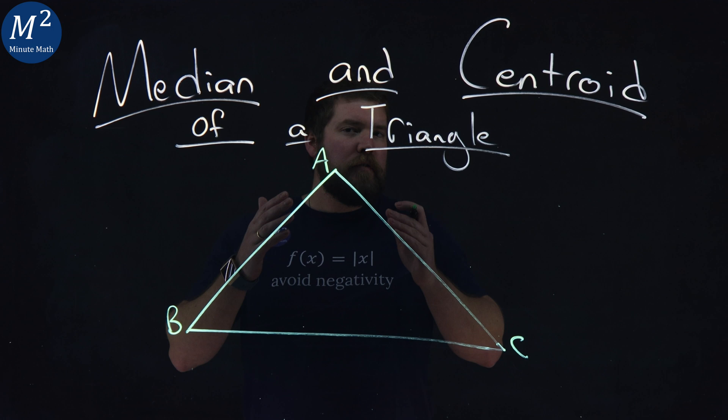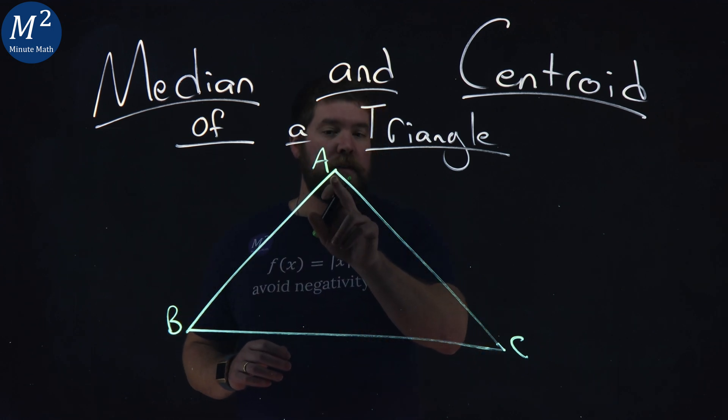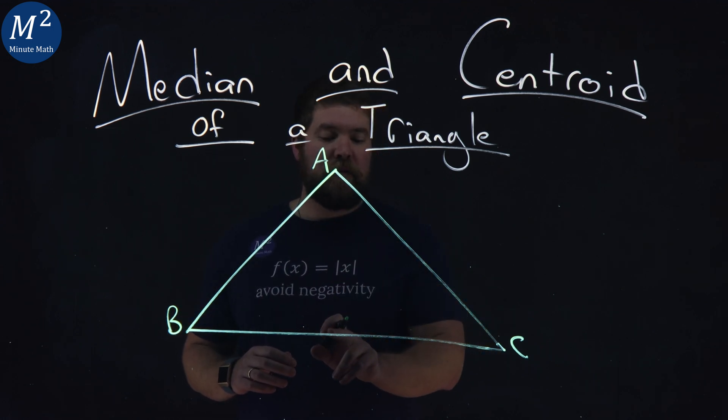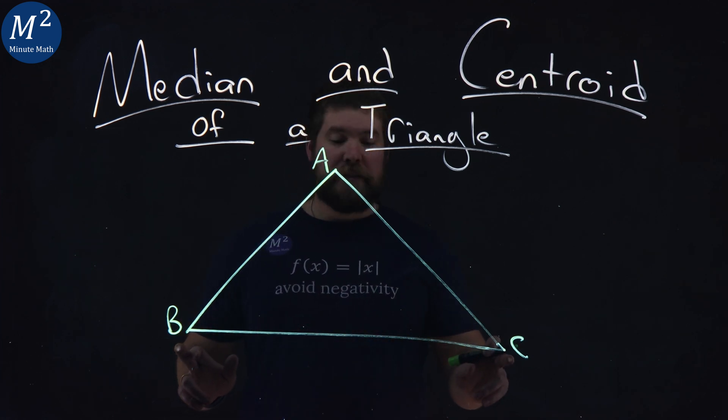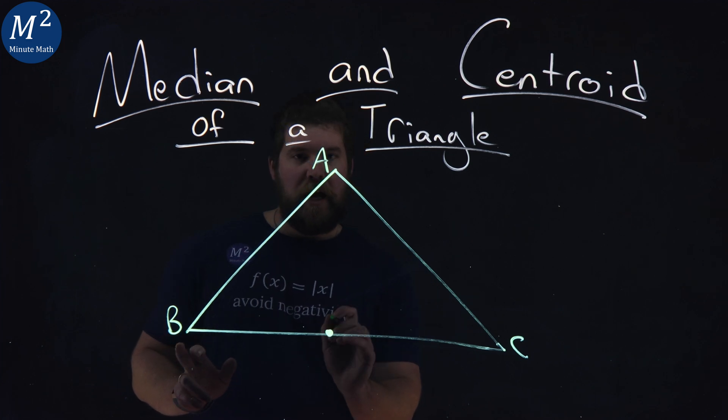The median of a triangle connects the vertex to its opposite side's midpoint. So we want to find the midpoint of BC. I'm going to eyeball it here. That should work out. And with a little a, I'll call this point right here.